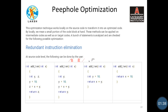In peephole optimization we include some techniques. The first is redundant instruction elimination — we have some redundant instructions in our code. For example, in this code we are calculating x plus y and assigning that value to z and returning z. Instead of using a new variable z, we can store this value in y and return y. We can further reduce this code by returning a simple x plus y, and further by replacing y with x plus 10 and returning that value. In this way we can reduce the size of code by eliminating redundant instructions.